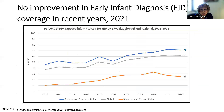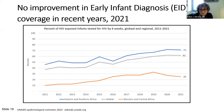To finish the prevention cascade, only 62% of infants born to mothers with HIV had a diagnostic test for HIV infection by week 8 in 2021. The geographic pattern looks the same as mothers on ART in pregnancy, with only 25% of babies in West Africa having that two-month early infant diagnostic test, reaching as high as 71% in Southern and Eastern Africa.